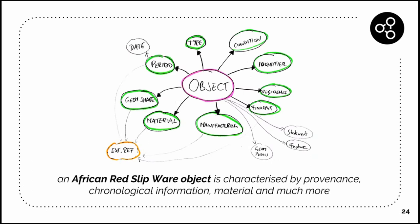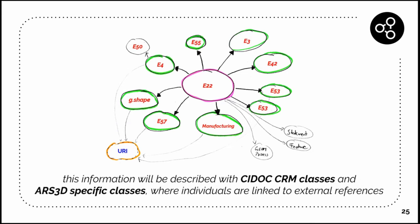An ARS object is characterized by some object metadata. We have some kind of condition of the object, an identifier, the residence, the find spot, some material, some shape, and also some period and date maybe. If we model and try to map that to CIDOC-CRM, there will be E22 as man-made object and some other very famous CIDOC-CRM classes, and also some classes we invented new in our ontology because they are not really clear inside of CIDOC-CRM.